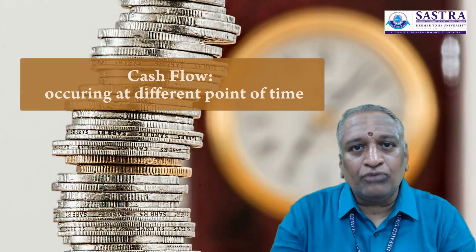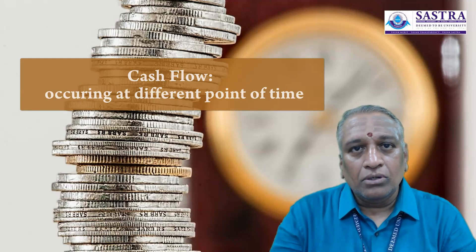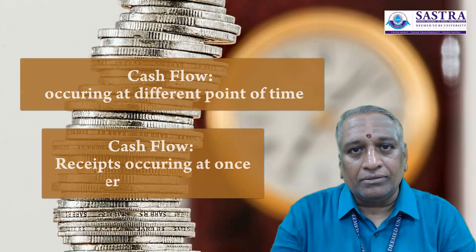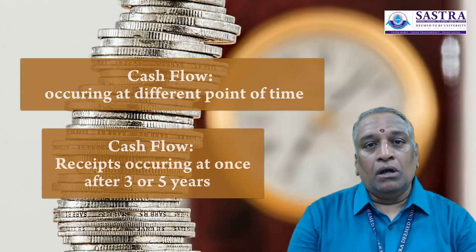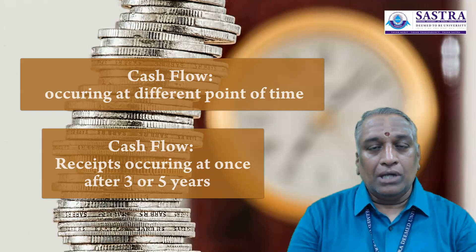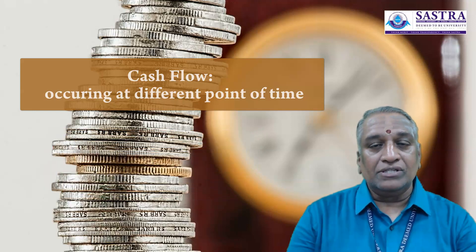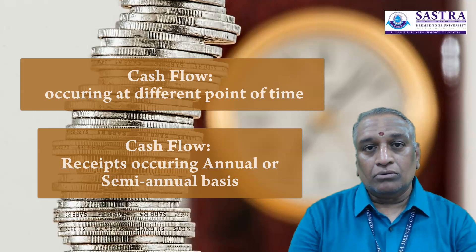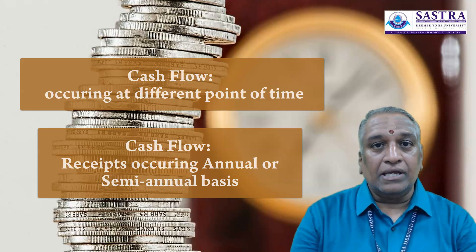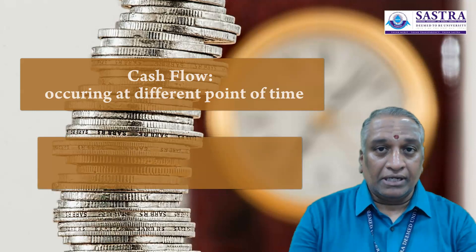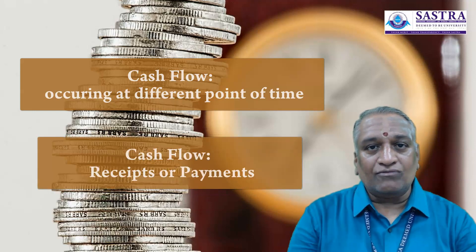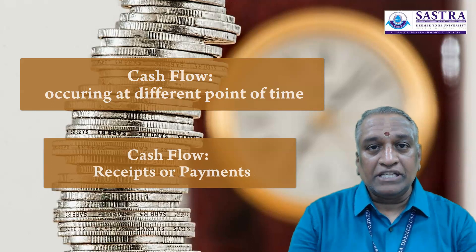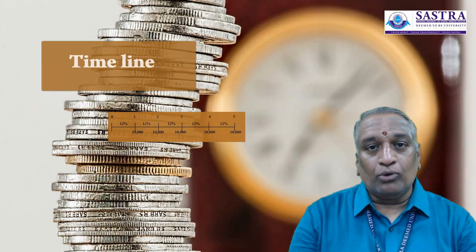When cash flows occur at different points in time, it is easier to deal with them using a timeline. Cash flows like receipts may likely occur after three years or after five years, or on an annual basis, year on year, or on a semi-annual basis — twice in a year — maybe a receipt or maybe a payment. All these are cash flows; they may be in the form of receipt or payment. For better understanding, we should know about the timeline.